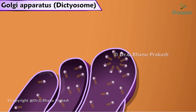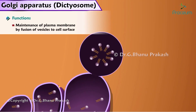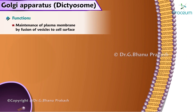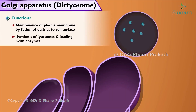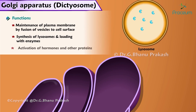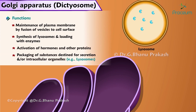Now let's look at some of the functions of the Golgi apparatus. These functions include maintenance of the plasma membrane by the fusion of vesicles containing a phospholipid bilayer to the cell surface, the synthesis of lysosomes and their loading with enzymes, the activation of hormones and other proteins, and the packaging of substances destined for secretion and/or intracellular organelles, such as lysosomes.